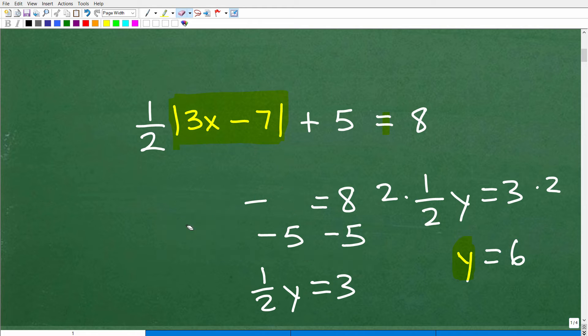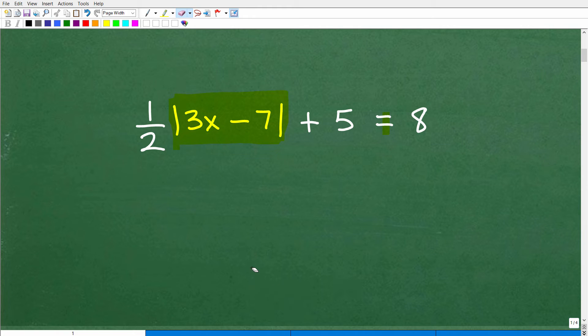Now, here is another thing that students do that is a very common mistake. Sometimes they'll confuse absolute value bars or this function here with parentheses. In other words, they'll think, okay, maybe I can do this one half times 3X minus 7. And here you can take this one half and distribute it to the things inside of these parentheses.